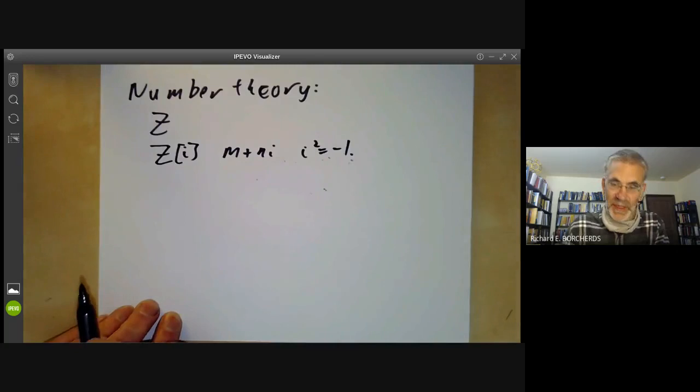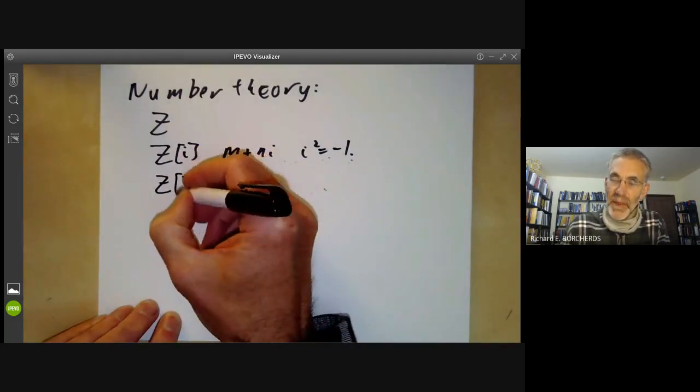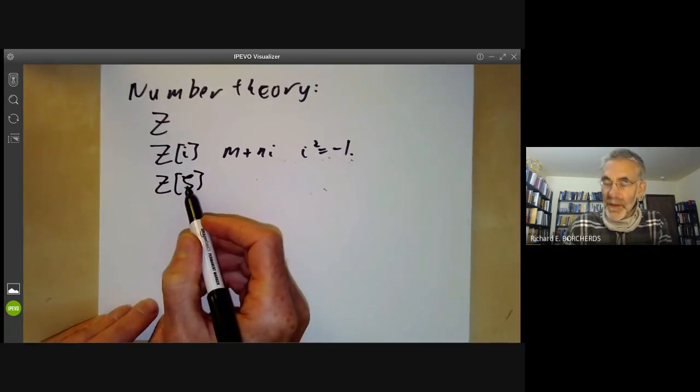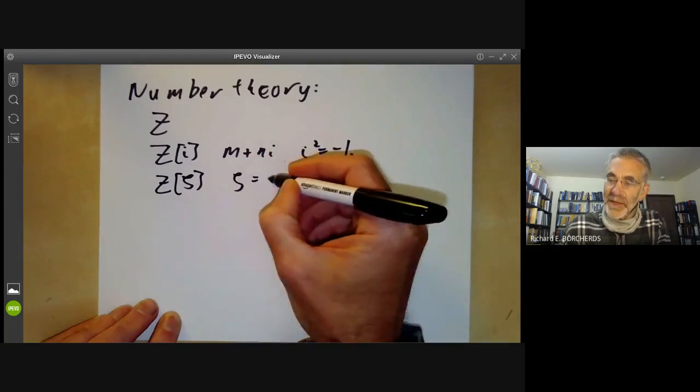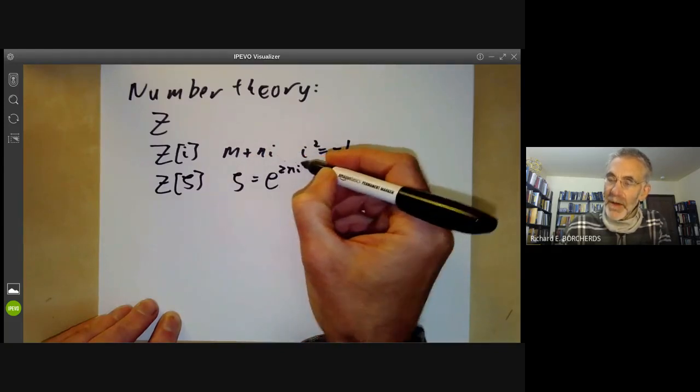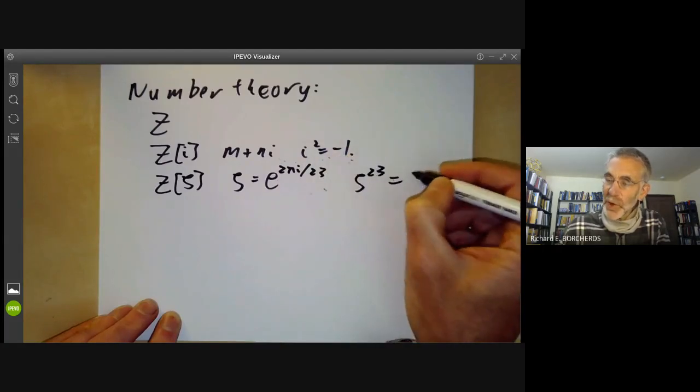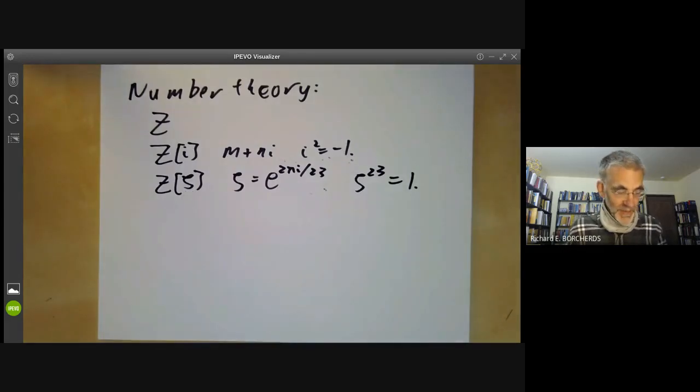Or you might take a cyclotomic field, all the numbers generated by ζ, where ζ might be e^(2πi/23), so ζ²³=1. This would be a cyclotomic field in number theory.